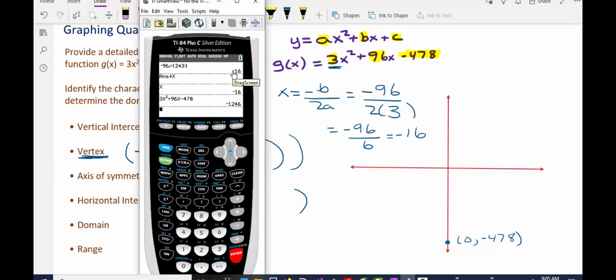Alternatively, when we found the x value to be negative 16, you could have just replaced x with negative 16 in the function. And you could have typed that out without using the variable x.